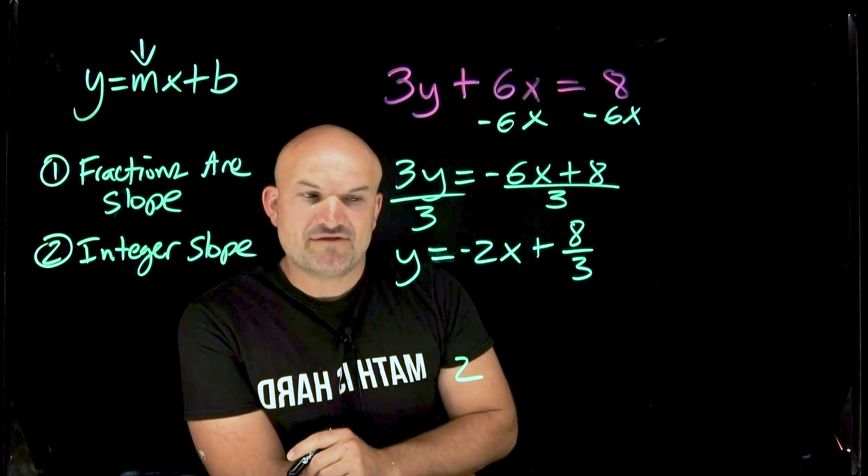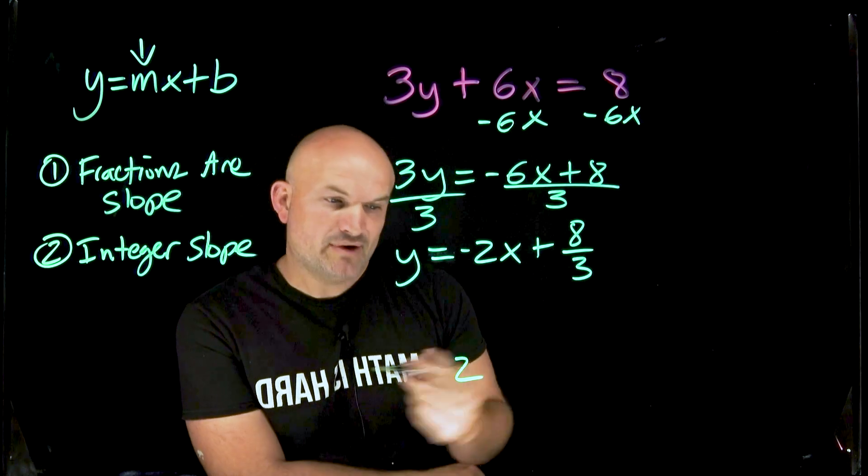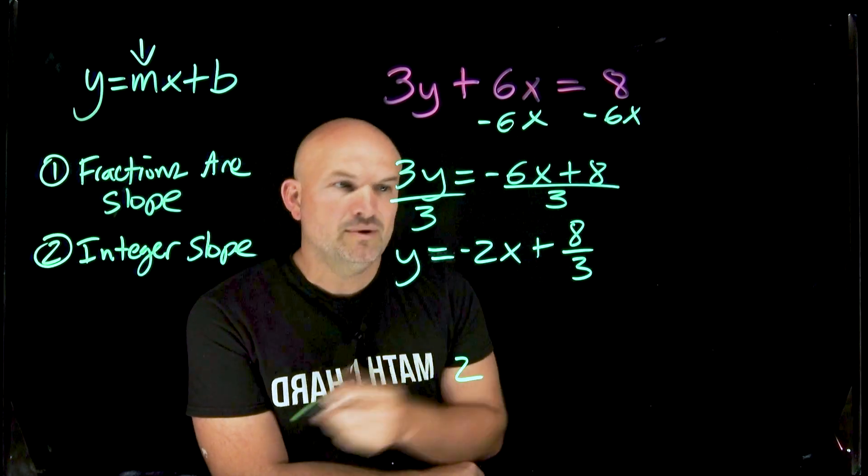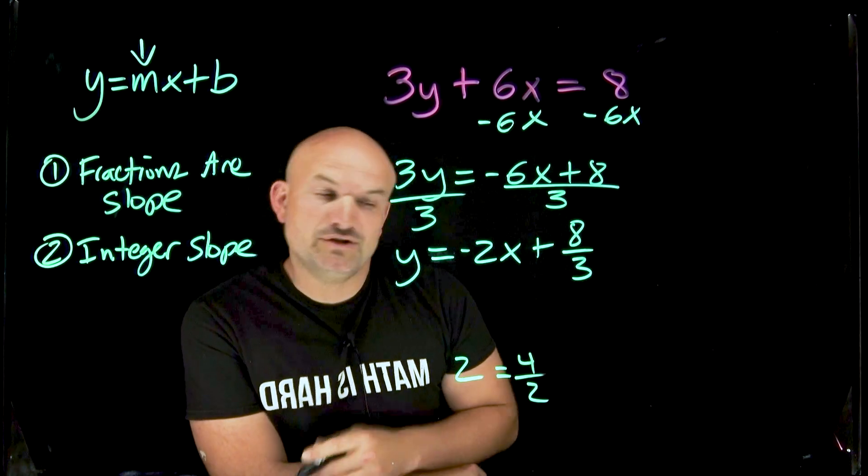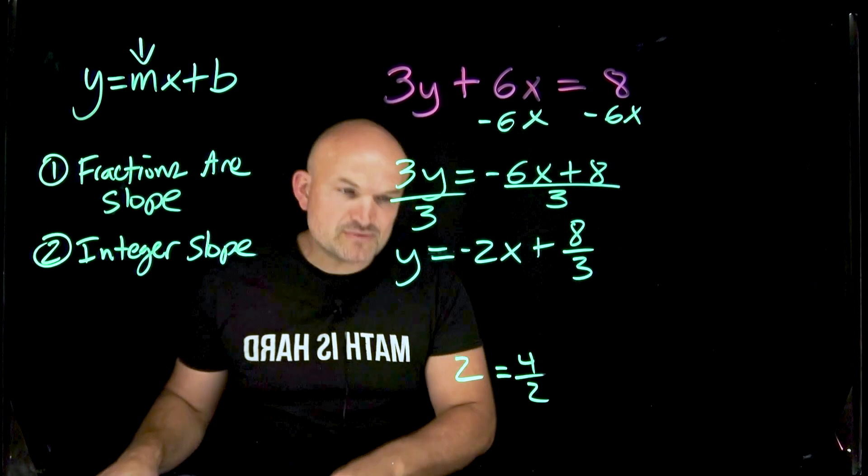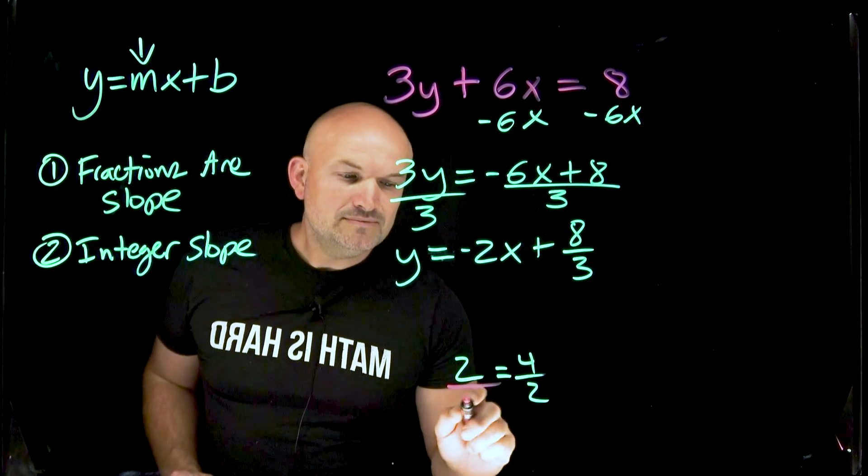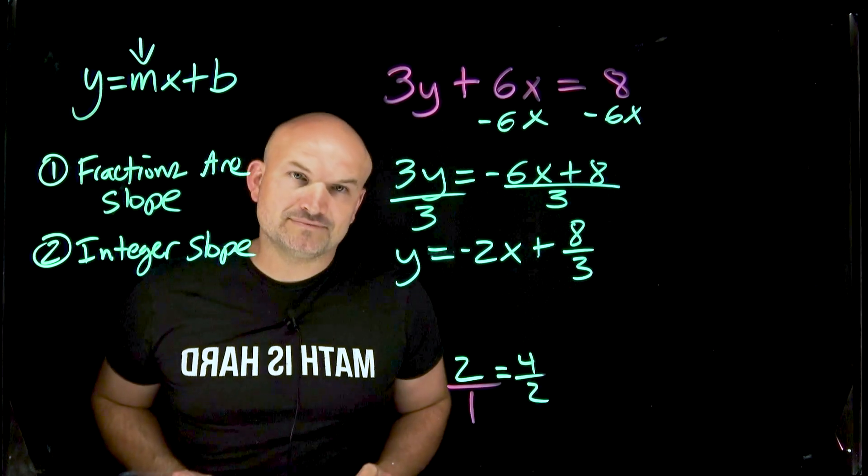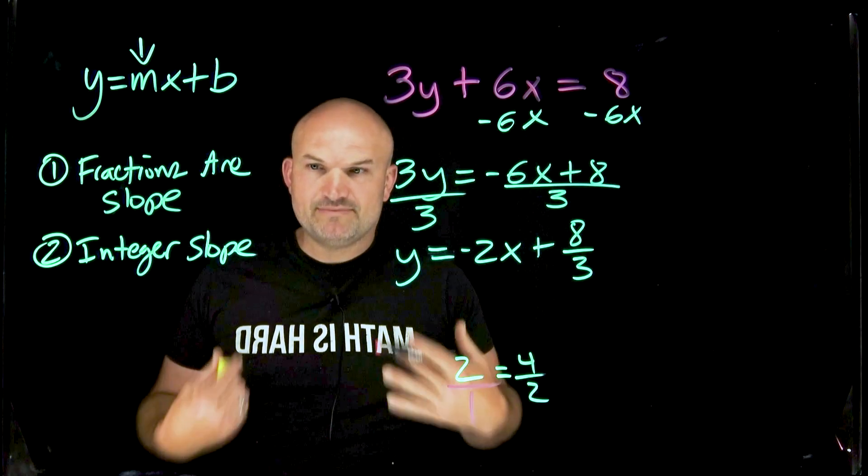So how do we rewrite 2 as a fraction? Well there's many different ways you can write it. You could say 4 divided by 2, you could rewrite it as 10 divided by 5. Whatever may be the case. But the easiest, the simplest way to do this ladies and gentlemen, is just to put a 2 over a 1, because 2 divided by 1 is going to be 1.